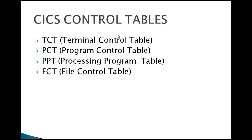Then we have FCT, the File Control Table. When a program uses different files, those file names and related details need to be registered in the FCT. The FCT contains information such as the file dataset, record length, and maximum and minimum length of records.